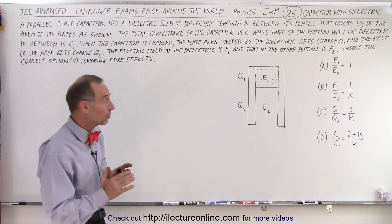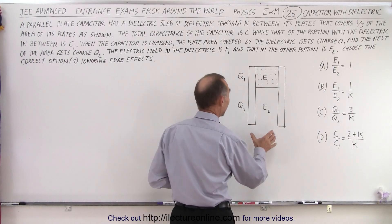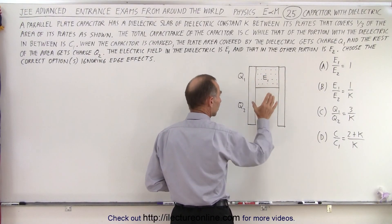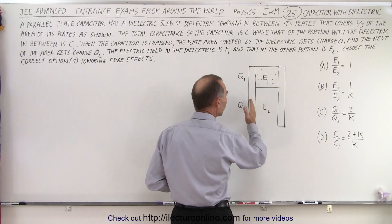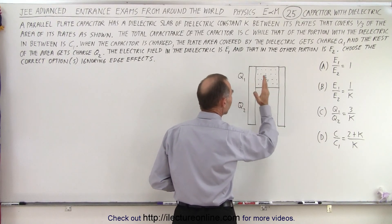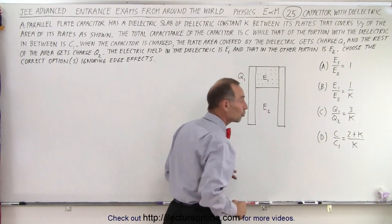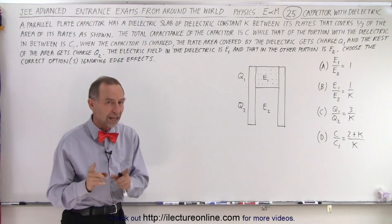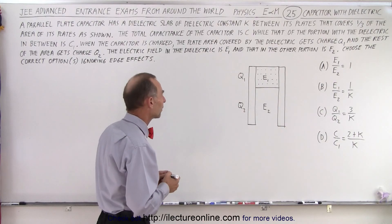One thing you can always be sure about a capacitor that has one portion with the dielectric and the other one does not, regardless of what the deal is anywhere else, you know that the potential difference across the two plates must be the same for the same two portions of the capacitor.